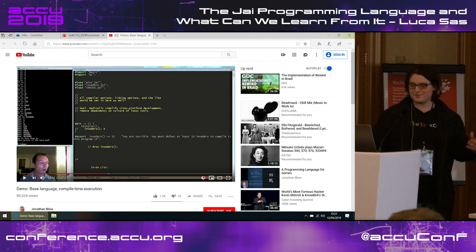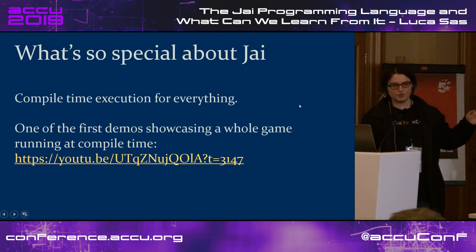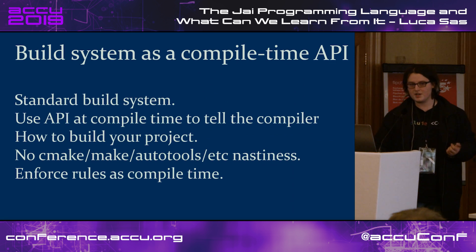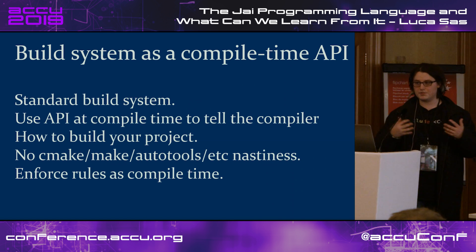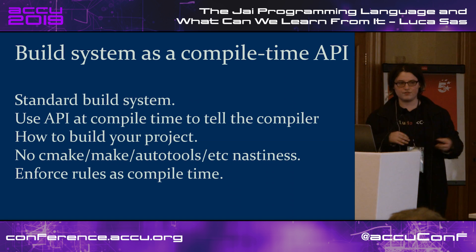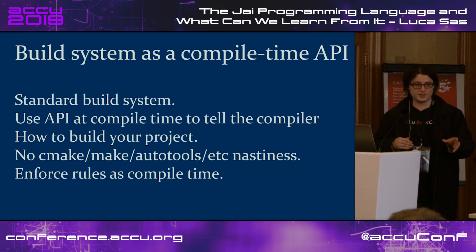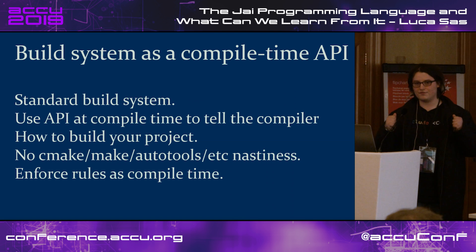This is a silly example, but this demo from 2014 was already pretty powerful in its mechanism of doing anything at compile time. A good example of what you can do at compile time is the build system. The build system is an API — you write a function that runs at compile time and you have an API through which you can tell the compiler your settings and your files to compile.